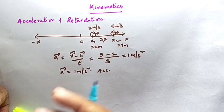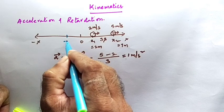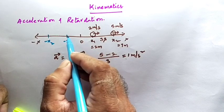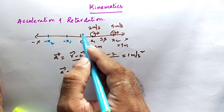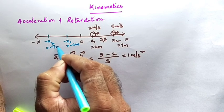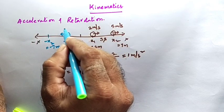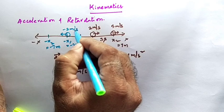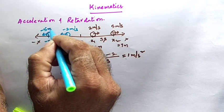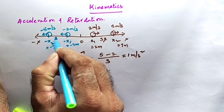Now let us see another example. Consider the body moving along the negative x-axis. I am observing the body's motion from minus x1 to minus x2. Let x1 = −2 meters and x2 = −7 meters. The body has a velocity in the negative x-direction: at x1 it is −2 meters per second, and at x2 it is −5 meters per second. It has taken 3 seconds to move from x1 to x2.